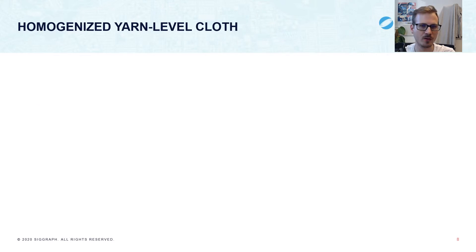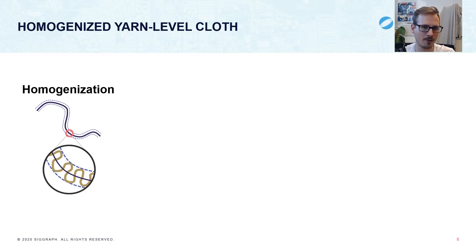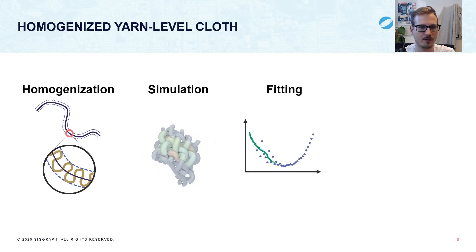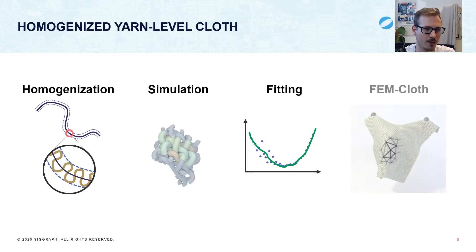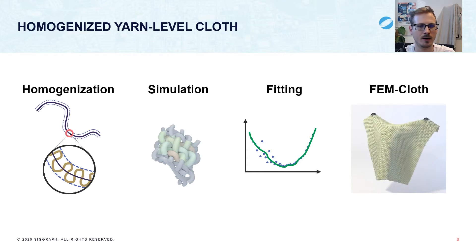To give an overview of our method, from homogenization theory we derive periodic boundary conditions that impose cloth-scale stretching and bending on yarn-scale simulations, from which we can then average a cloth-scale energy density value. We generate data by doing this for many deformations, and then fit an energy density function that describes the full pattern dependent elastic response. Then we simply plug this into a finite element cloth solver and obtain results that match full yarn level simulations at a fraction of the cost.